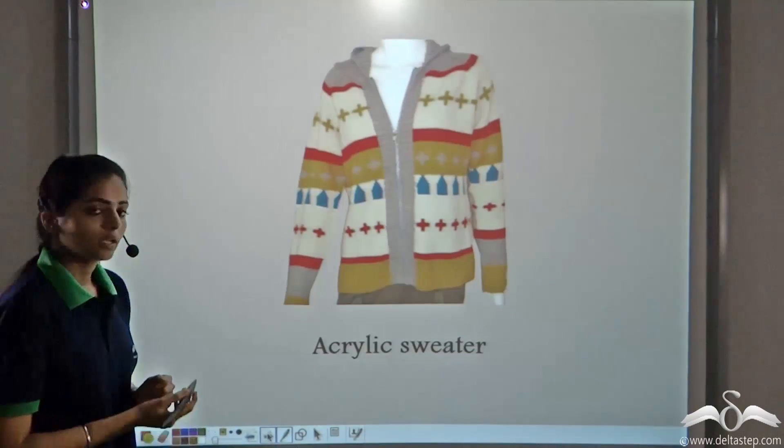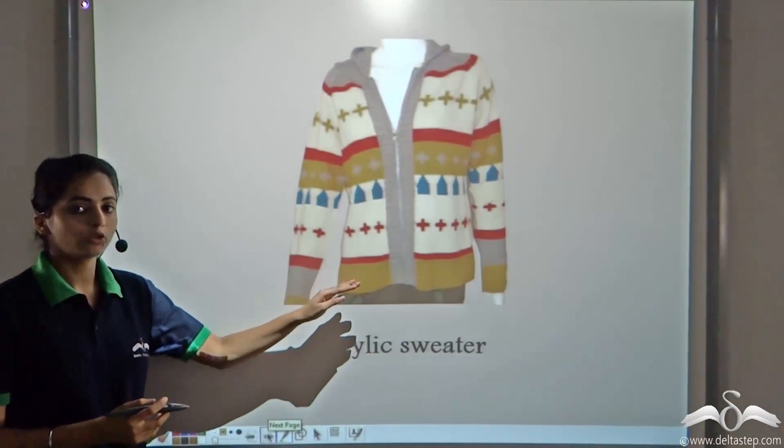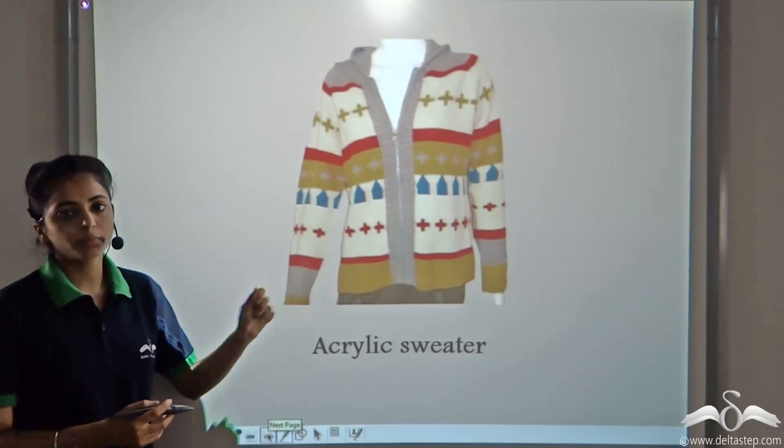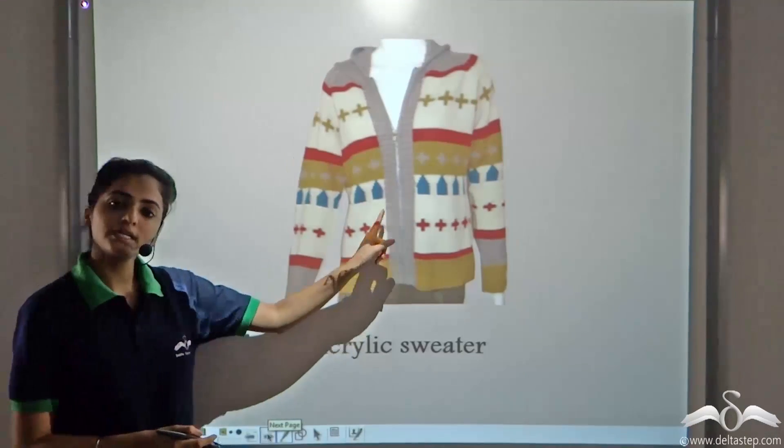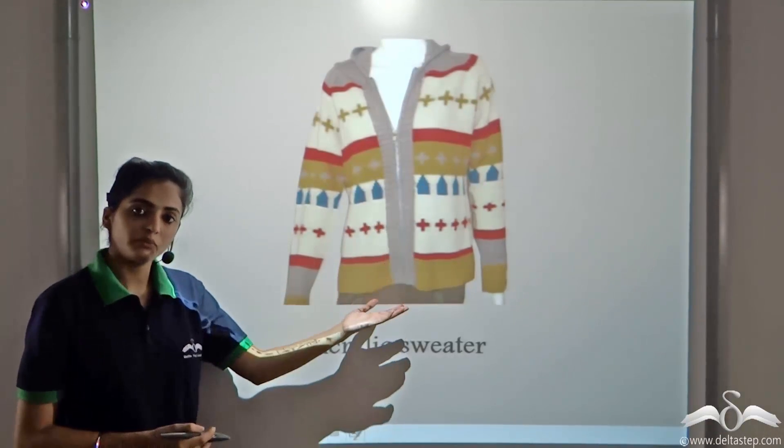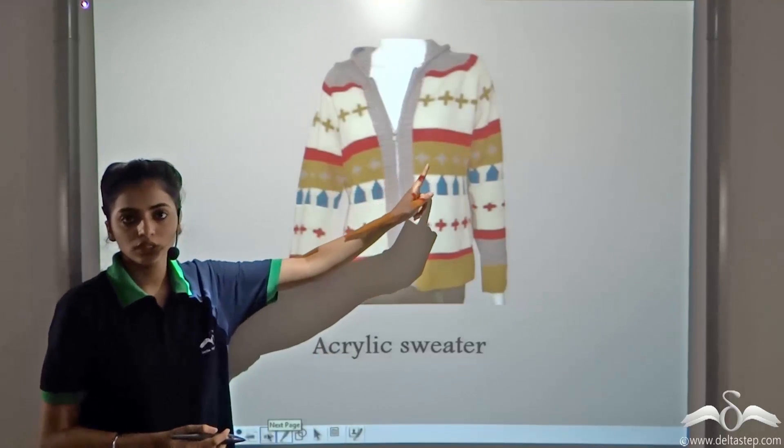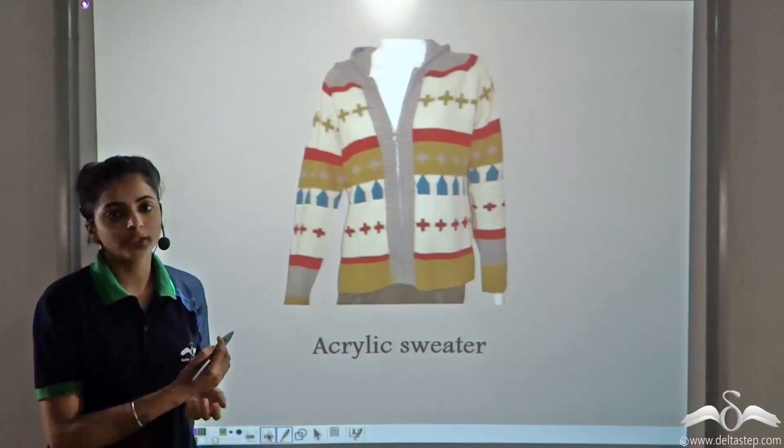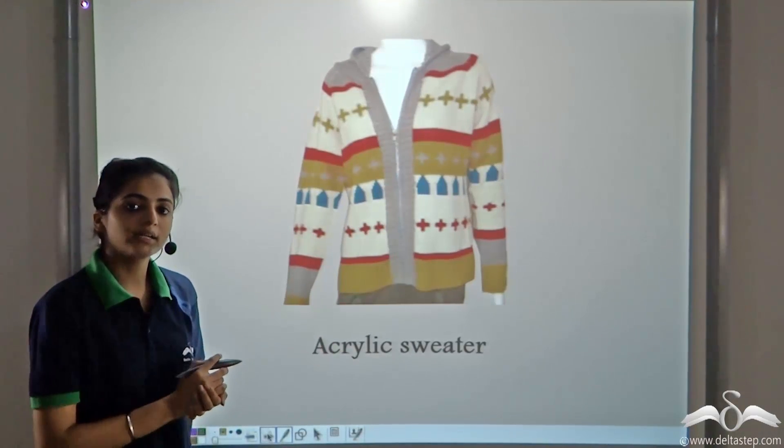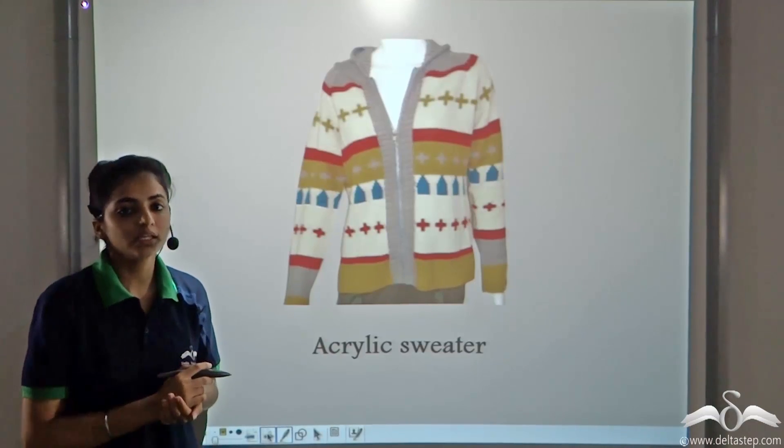And acrylic. Acrylic has a woolen kind of appearance. So they are used for making sweaters. They are not exactly woolen sweaters that we wear, but they have the look, the appearance of the woolen sweater. So acrylic fibers are used for making sweaters.